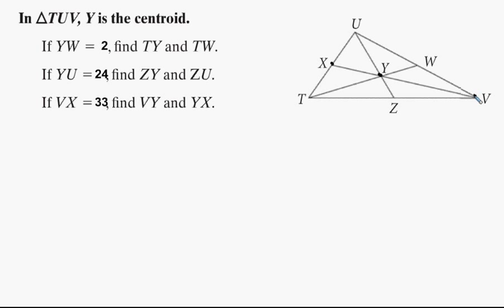So first we're told that YW equals 2, and that's YW right here. We want to find TY and also the whole median from T to W. As we just said, we know that the distance from the median to the centroid is half the distance from the centroid to the vertex. So that means that YW, the midpoint to the centroid, is one-half of TY.